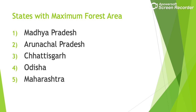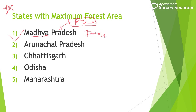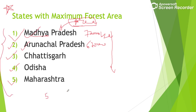For state-wise maximum forest area, the top five states are: Madhya Pradesh (around 77,000 sq km), Arunachal Pradesh (around 67,000 sq km), Chhattisgarh, Odisha, and Maharashtra. This is area-wise, not percentage-wise. Remember this sequence clearly.